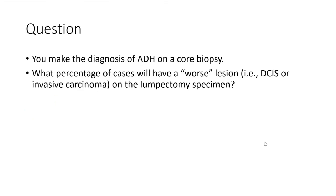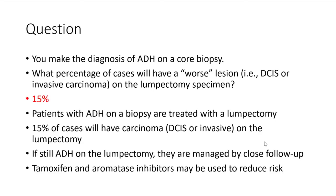If you make the diagnosis of atypical ductal hyperplasia on a needle core biopsy, approximately 15% of cases will have a worse lesion — meaning DCIS or invasive carcinoma — on the lumpectomy specimen. Patients with atypical ductal hyperplasia on biopsy are generally treated with lumpectomy. If all that's found on the lumpectomy is atypical ductal hyperplasia, they are managed by close follow-up. Tamoxifen and aromatase inhibitors may be used to help reduce risk. So ADH on biopsy may indicate something worse on resection; if only ADH is found after lumpectomy, it's treated as a general marker of risk. That's the end of case two.